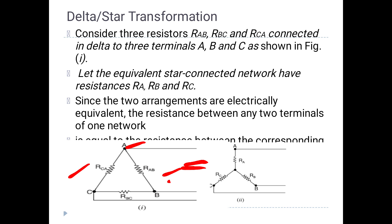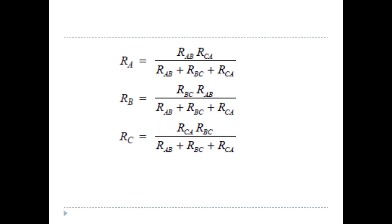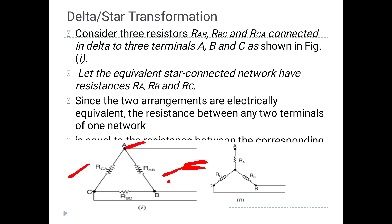The resistance between any two terminals of one network is equal to the other network. In the delta network with terminals A, B, C, we have RAB, RBC, and RCA. We will convert these to the star resistances RA, RB, and RC — this is delta to star conversion.